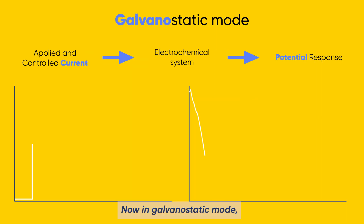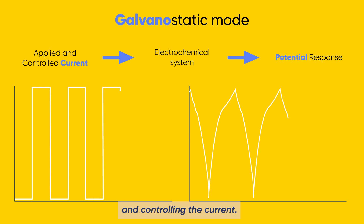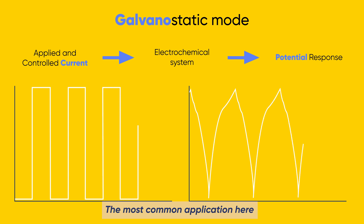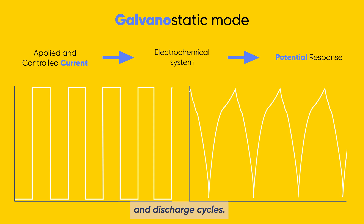In galvanostatic mode, the instrument measures potential variations of the current while applying and controlling the current. The most common application here being battery and battery materials testing, such as repeated charge and discharge cycles.